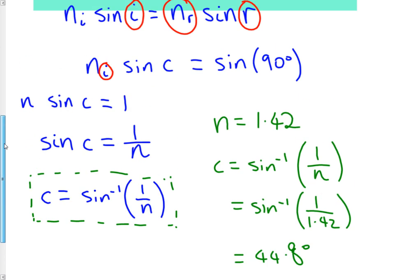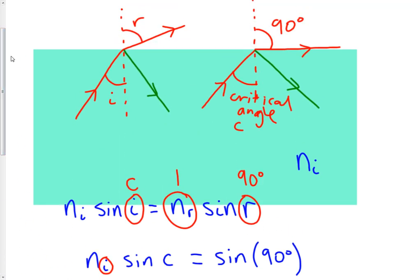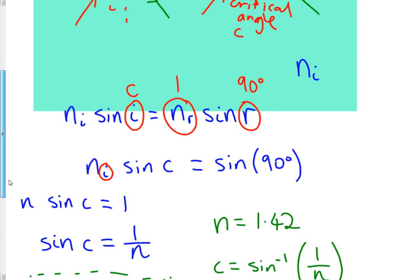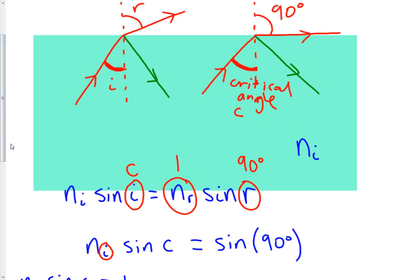That's the critical angle. If we go back up, if my angle of incidence is less than 44.8 degrees, then some of the light is going to refract out and some will reflect back into the glass. If it's exactly equal to that angle, then just a tiny bit of light will refract along the surface and the rest will reflect inside. Any angle of incidence greater than 44.8 degrees, and all of the light will reflect internally.